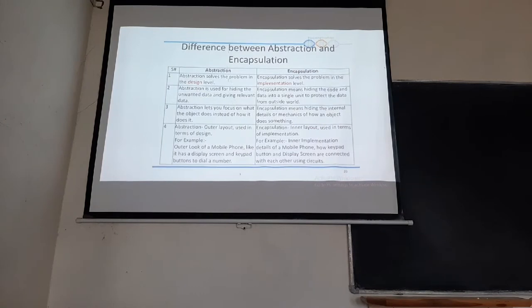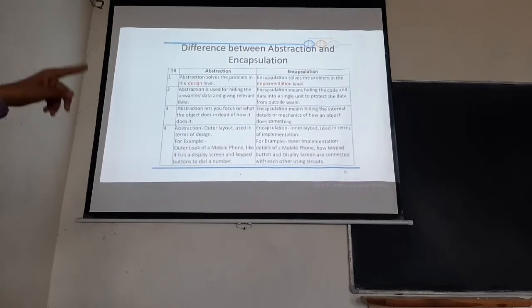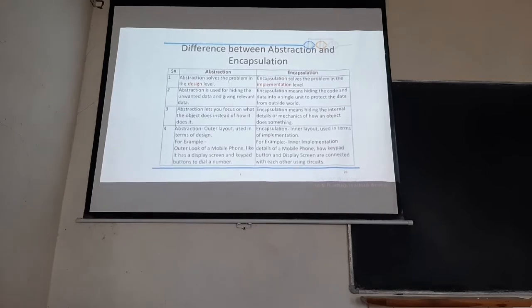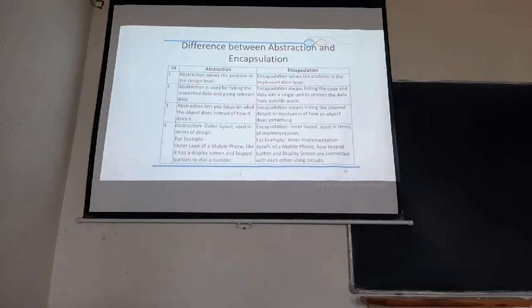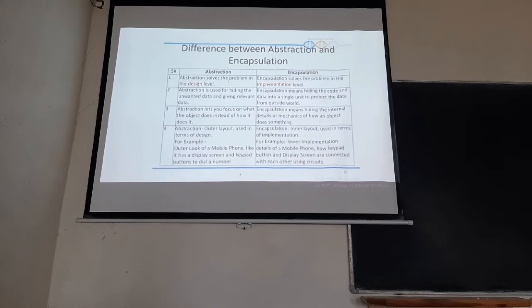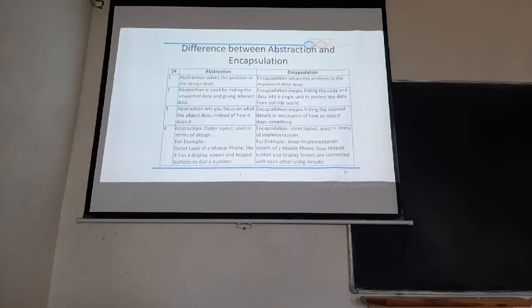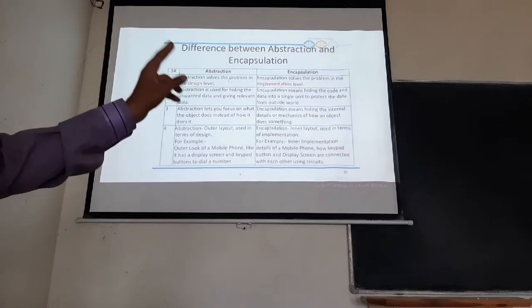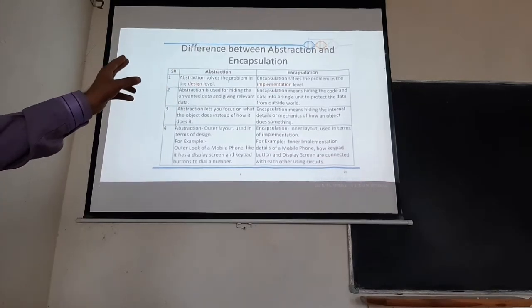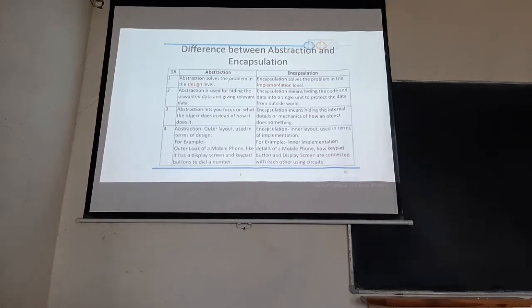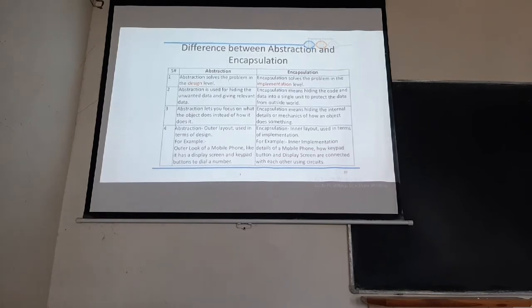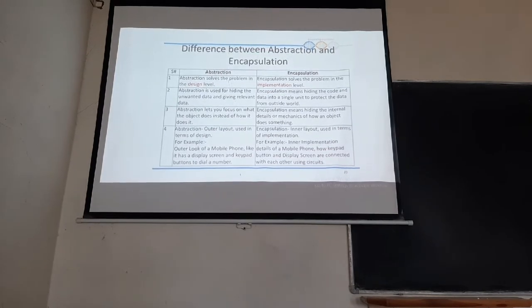Abstraction is used for hiding the unwanted data and giving relevant data. Encapsulation is protecting the data from the outside. Abstraction lets you focus on what the object does instead of how it does it. You will know what the object is doing but not what actually it is doing within the system.